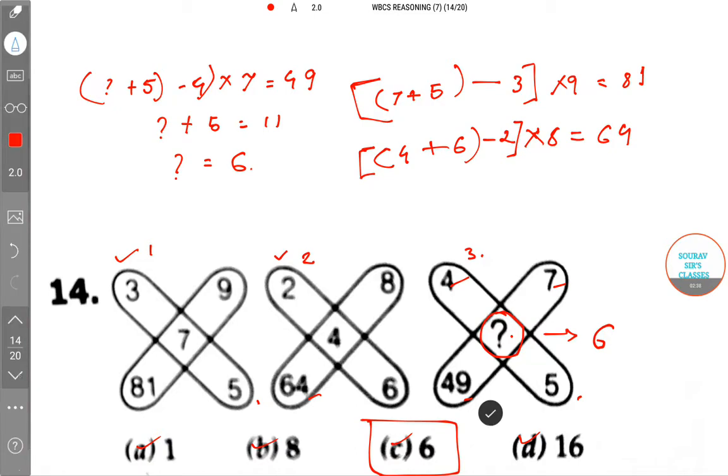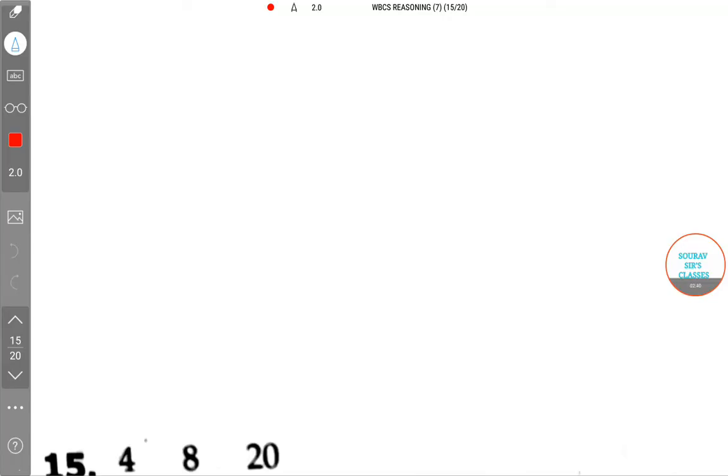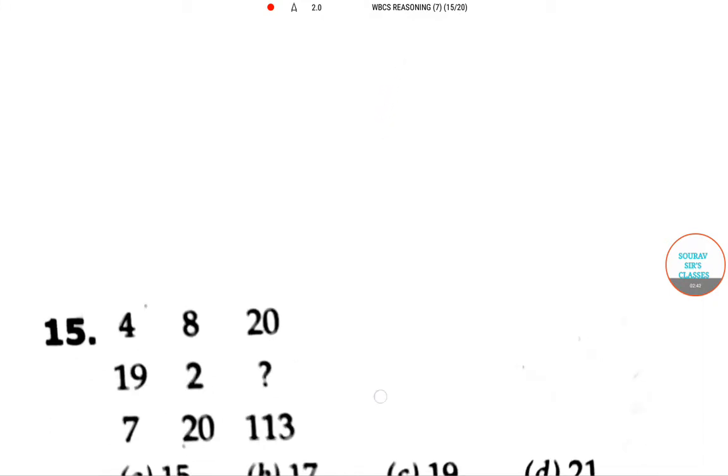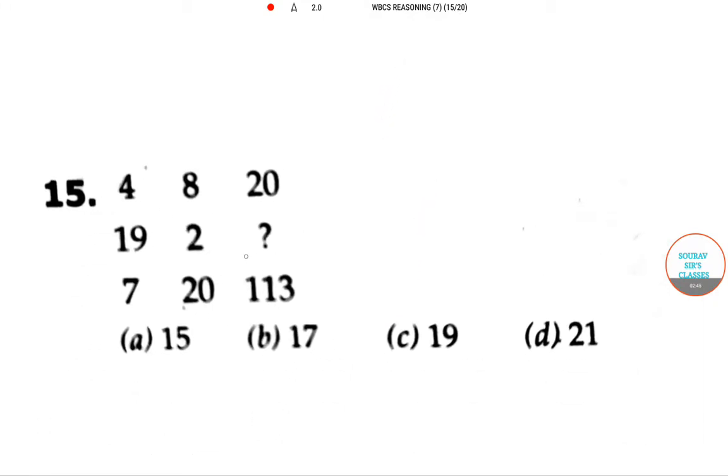Now we can proceed for the second question. It's a column type of question. Examiner wants us to find what digit we can place in this position. So in this position, as I said earlier, there must be any formula for this question also.